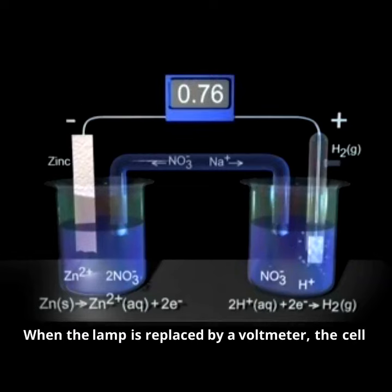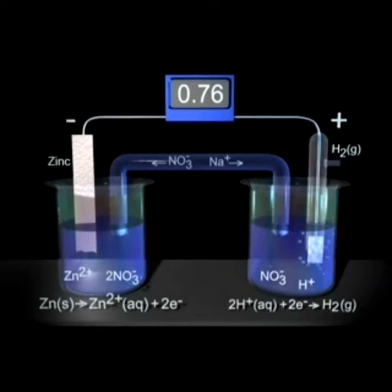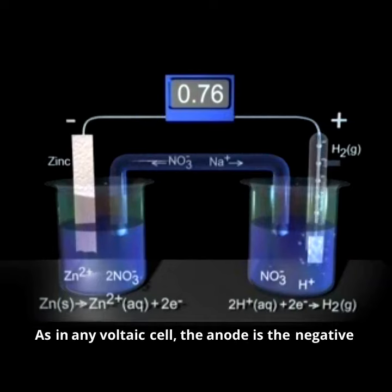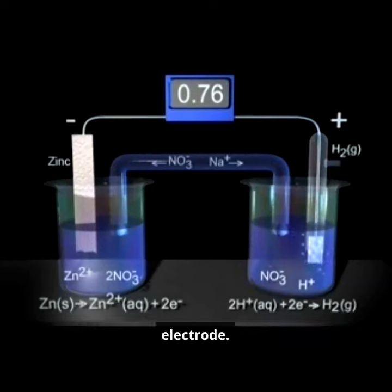When the lamp is replaced by a voltmeter, the cell potential measures 0.76 volts. Electrons flow from the zinc anode through the voltmeter to the hydrogen electrode, which is the cathode. As in any voltaic cell, the anode is the negative electrode, and the cathode is the positive electrode.